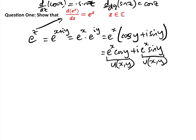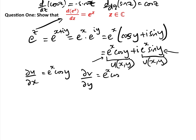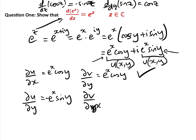First we have to check the Cauchy-Riemann equations. The partial derivative ∂u/∂x = e^x·cos y, and ∂v/∂y = e^x·cos y — so they are the same, no problem there. Then ∂u/∂y = -e^x·sin y, and -∂v/∂x = -e^x·sin y — so they agree as well.